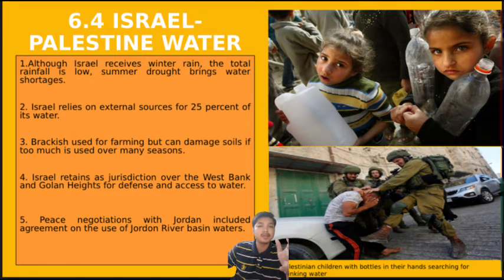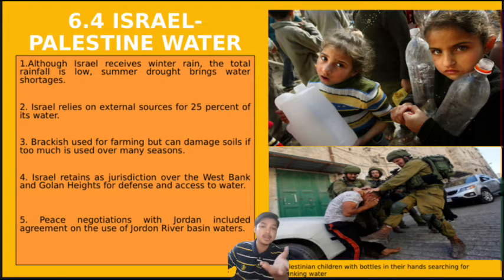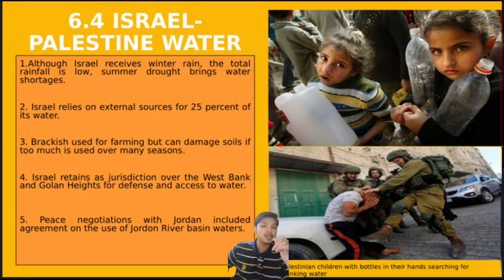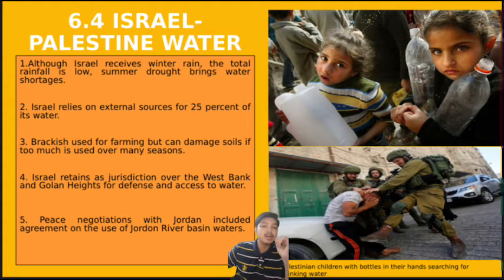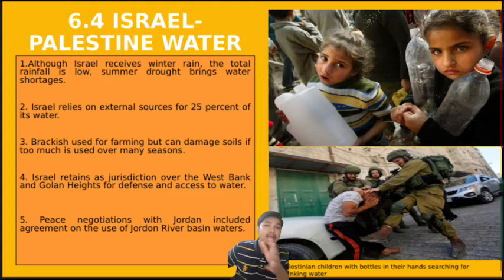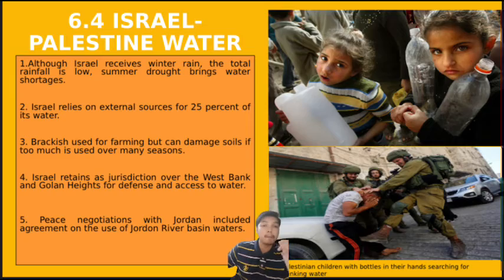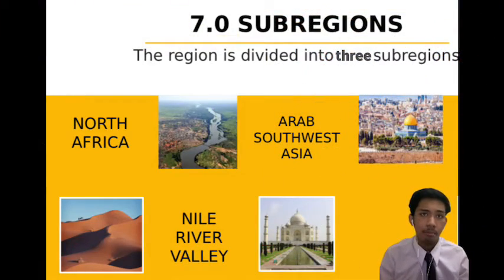Regarding the Israel-Palestine water crisis: even though Israel receives some rainfall, total rainfall is low, and summer brings water shortages. The country depends on external sources for about 20% of its water. Brackish water used for farming can damage soils if used excessively over many seasons. The government controls the West Bank and Golan Heights for defense and water access. There are also peace negotiations with the Kingdom of Jordan, including an agreement to use the Jordan River water basin.